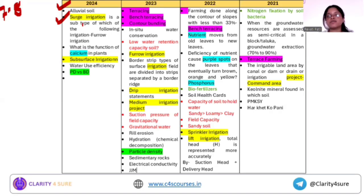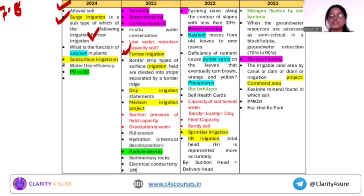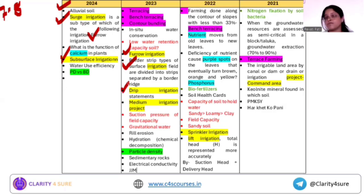This is how the questions are moving. Next is subsurface irrigation, then border strip type of surface irrigation. The drip irrigation question was a conceptual statement-based question. Most of us have a general idea about drip irrigation, but the question was conceptually based.